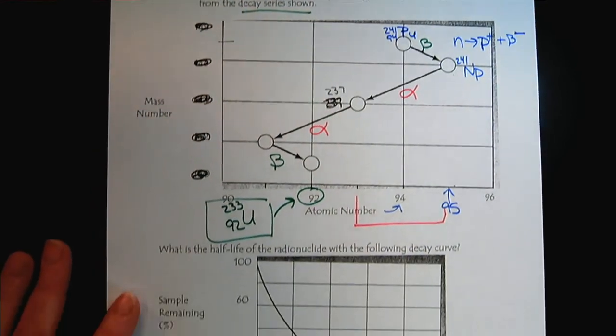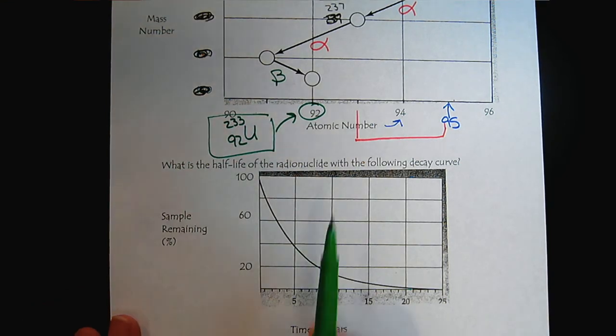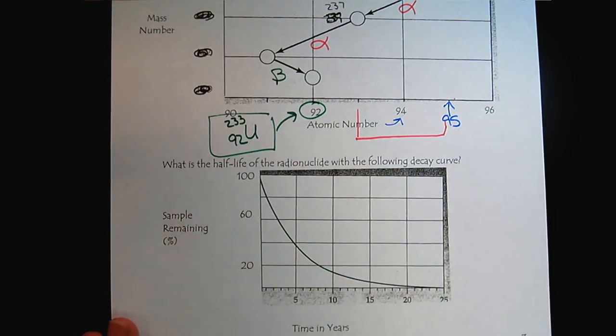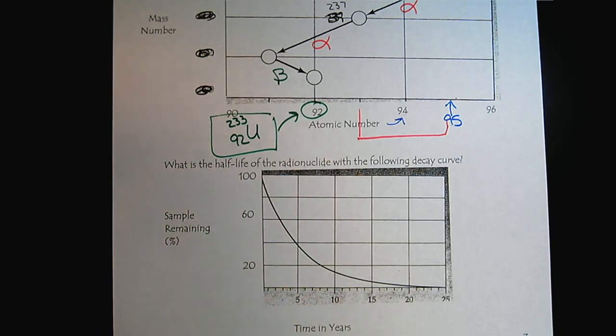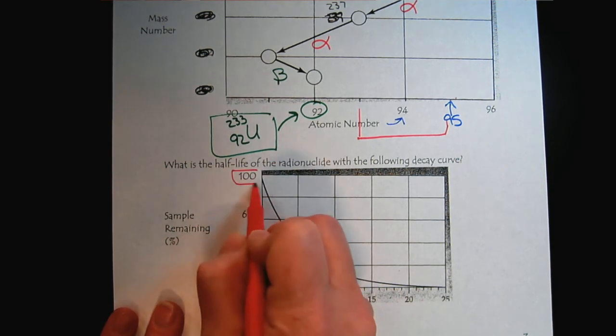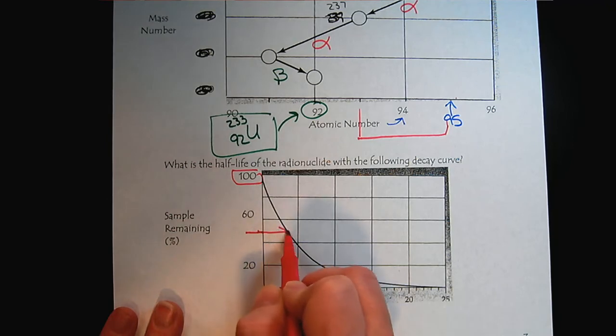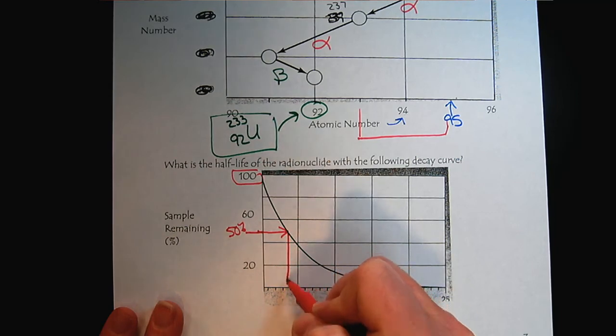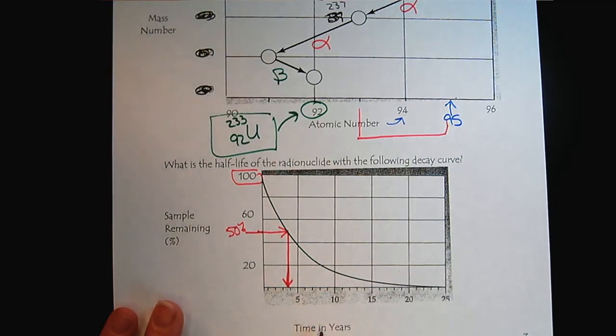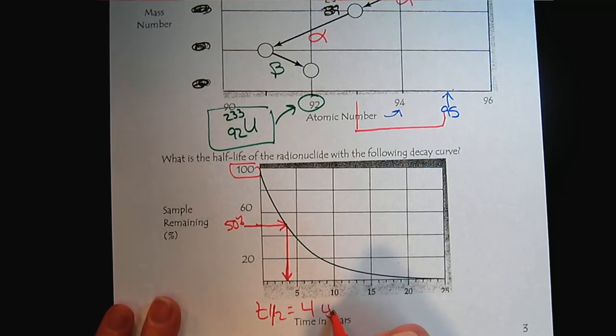Now let's look at this last one here for practice. What is the half-life of a radionuclide with the following decay curve? So, here's the sample remaining. So, remember the key here is to look. We started at 100%, so we want to get to 50. So, if we look here, we find 50%, and then we look down, and we see this is the time in years, so the half-life would be approximately 4 years.